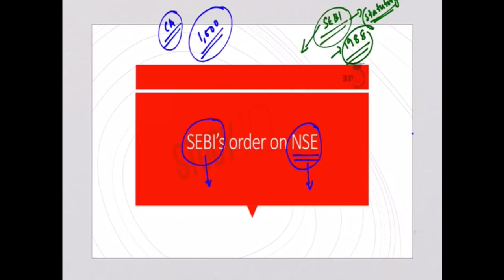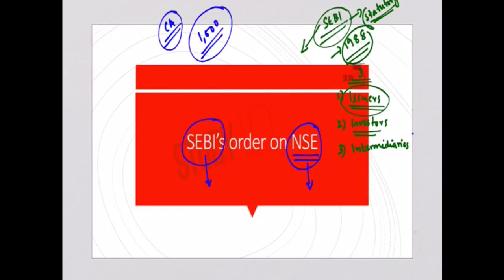SEBI functions to fulfill the requirements of three categories. First, issuers — those companies that issue shares. Second, investors — SEBI works for the safety and supply of precise and adequate information for investors to make mature investment decisions. Third, it protects the interest of intermediaries by providing a competitive and professional market for them.